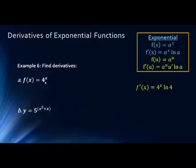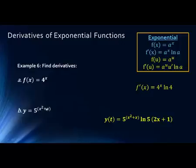For a simple example with A equals 4, we just plug in: the derivative of 4 to the x is 4 to the x times the natural log of 4. For the last example, A equals 5 and U equals x squared plus x. The derivative — that should be Y prime, not Y of T — is 5 to the exponent, times the natural log of 5, times the derivative of the exponent, which is 2x plus 1.